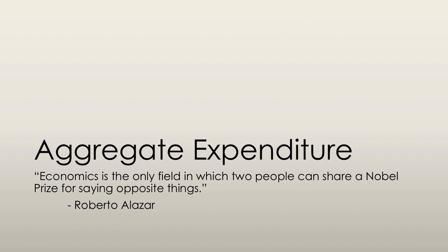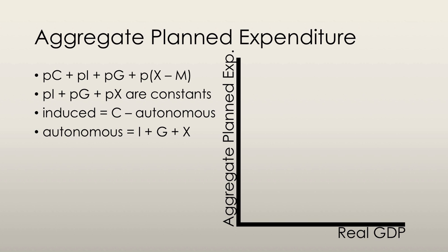Let's move on and talk about aggregate expenditure. To calculate planned expenditure at any given real GDP, the expenditure components that we talked about earlier must be added together. So we have planned consumption, planned investment, planned government spending, and planned exports minus imports. You add those together and you can calculate planned expenditure at a given level of real GDP.